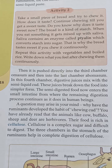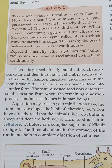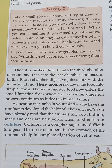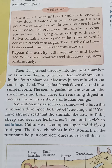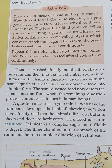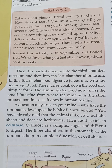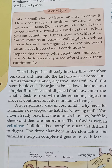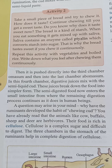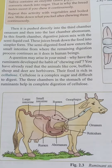جو last کے تین chambers ہیں ruminant کے stomach کے، وہ digestion of cellulose میں بہت مدد کرتے ہیں — یعنی cellulose کو digest کرنے میں وہ بہت اہم کردار ادا کرتے ہیں۔ Now see this figure.